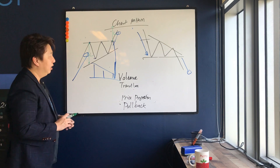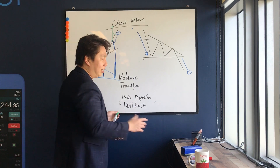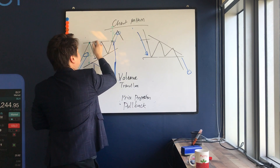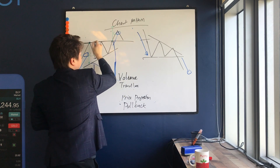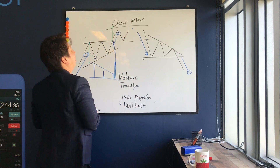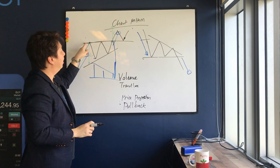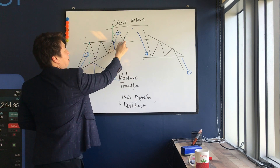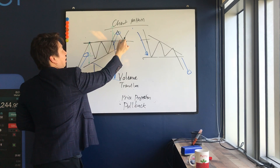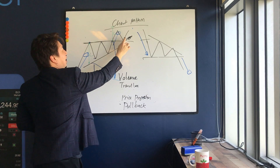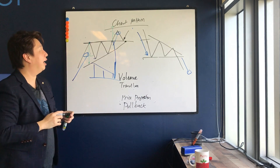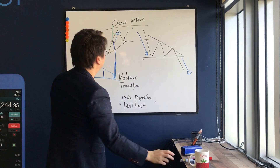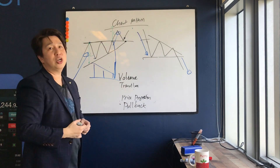For ascending triangles, after the breakout move there will usually be a pullback to test this resistance, which now becomes a support. You can also find what we call the apex — the highest point of this triangle — as a reference point. This is how you can identify an ascending triangle.